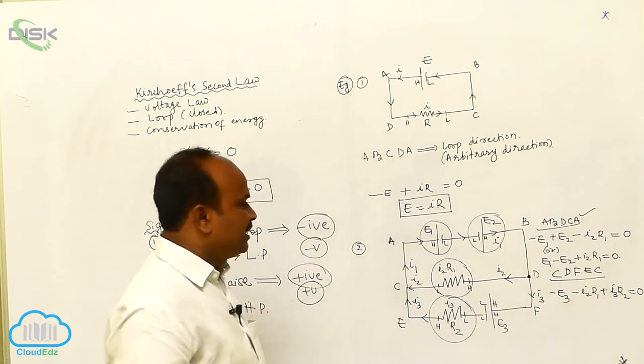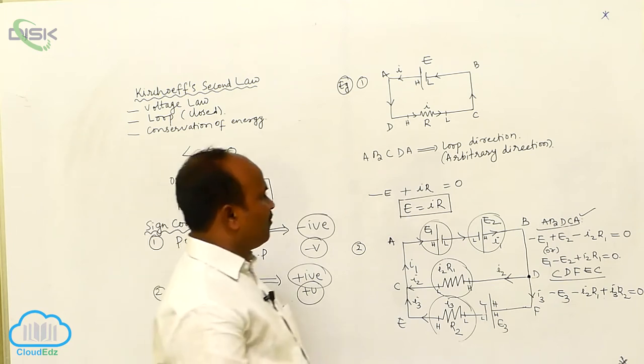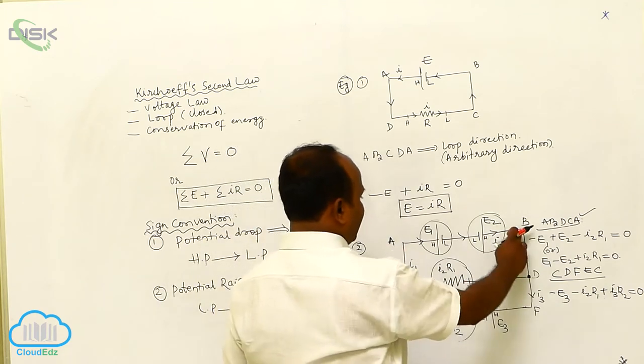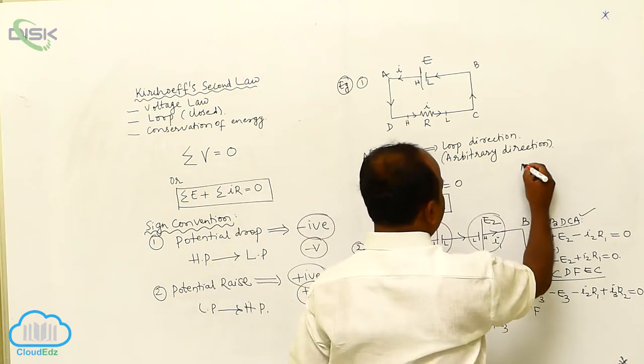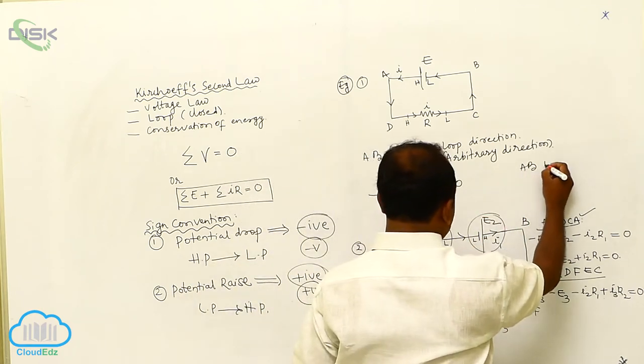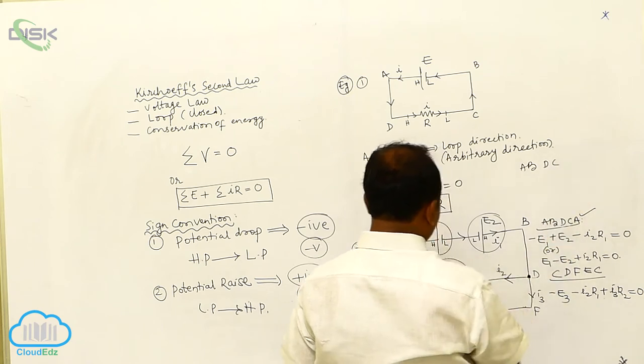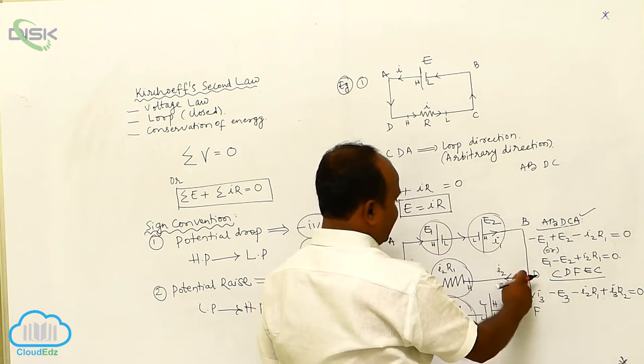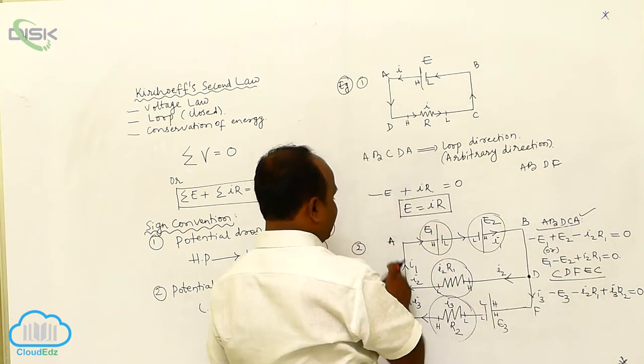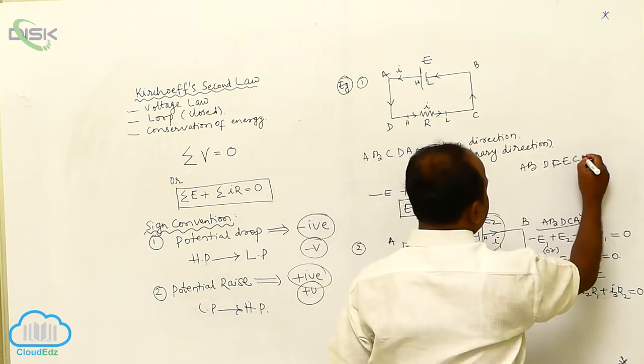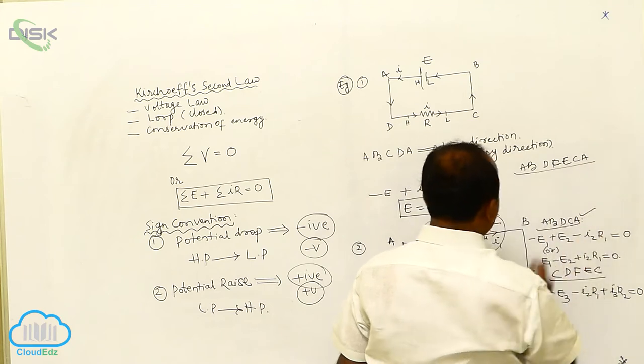Next, let us consider the third loop. A, B, D, F, E, C, A. This is the particular loop.